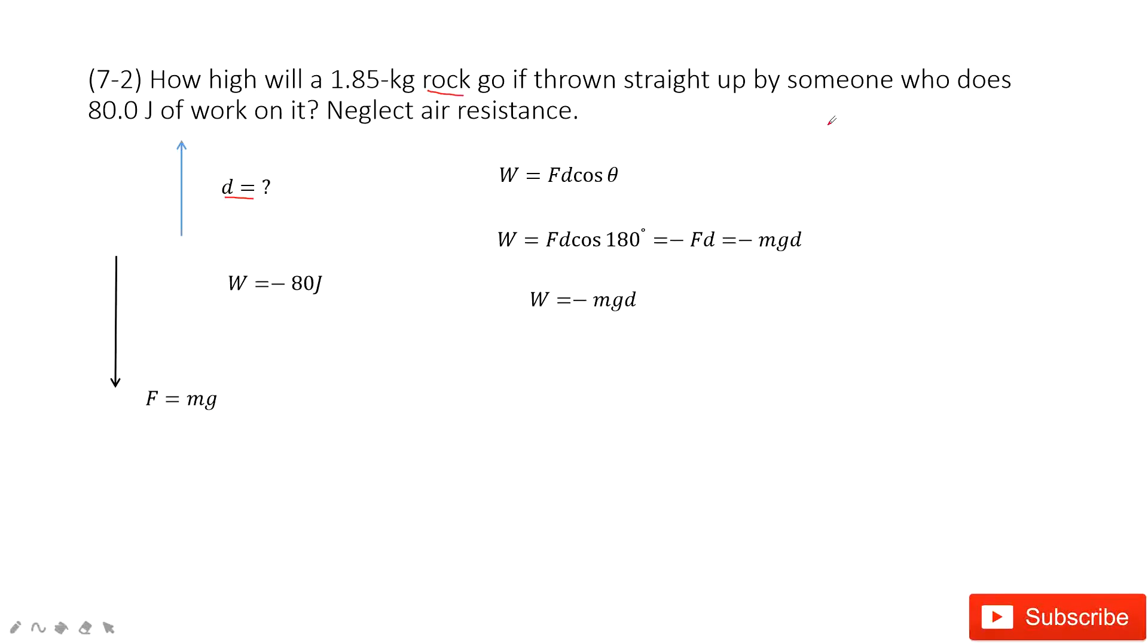I tell you, someone does work on this stone. This work is 80 joules. So someone does work on the object. That means the object does negative 80 joules work on someone. Do you agree?